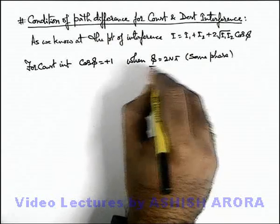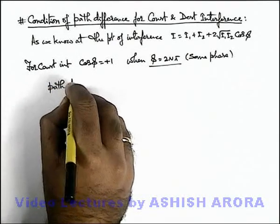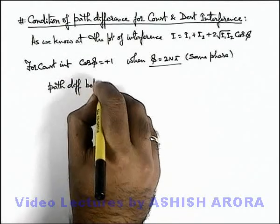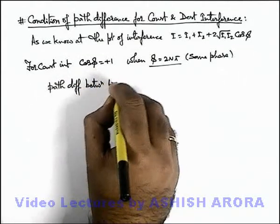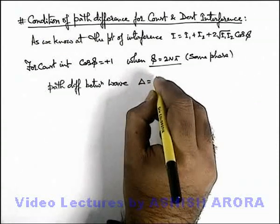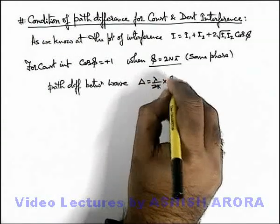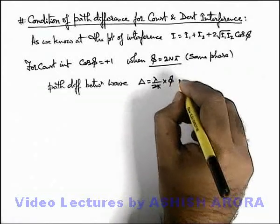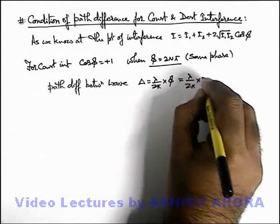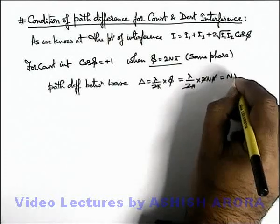Now if the phase difference is 2nπ, we find out the path difference between the interfering waves at the point of superposition. The path difference is given as λ over 2π multiplied by the phase difference, so substituting we get λ over 2π multiplied by 2nπ, which gives nλ.